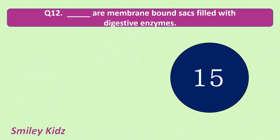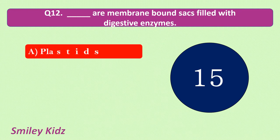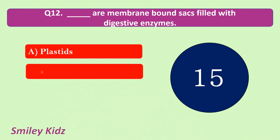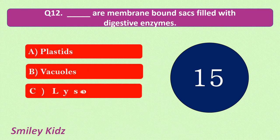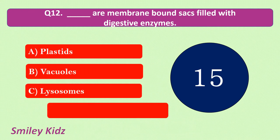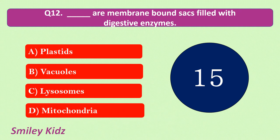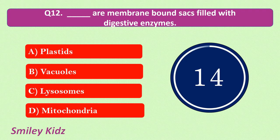Question number 12. Dash are membrane-bound sacs filled with digestive enzymes. Your options are: plastids, vacuoles, lysosomes, mitochondria. Your time starts now.